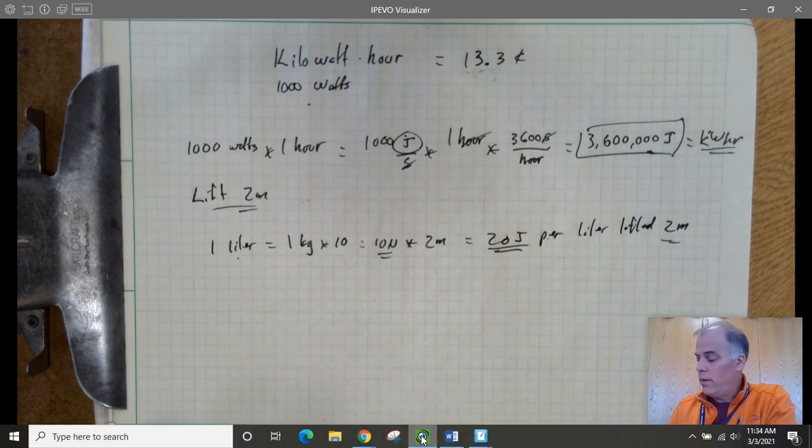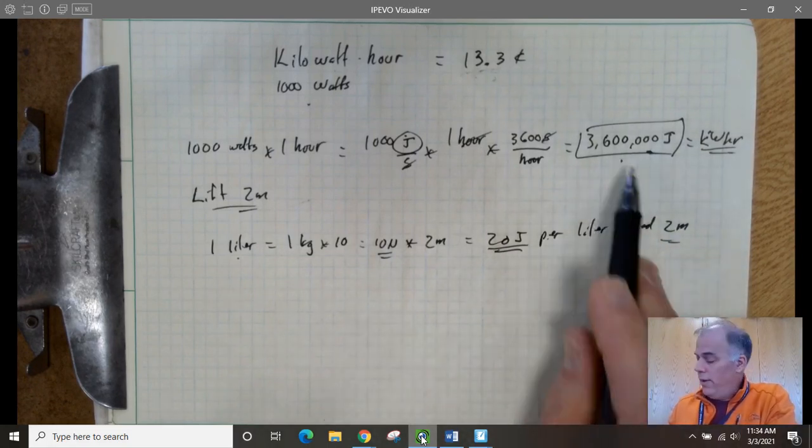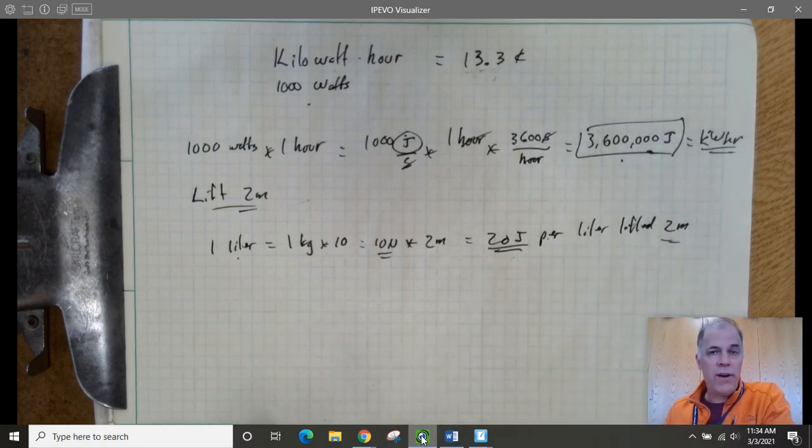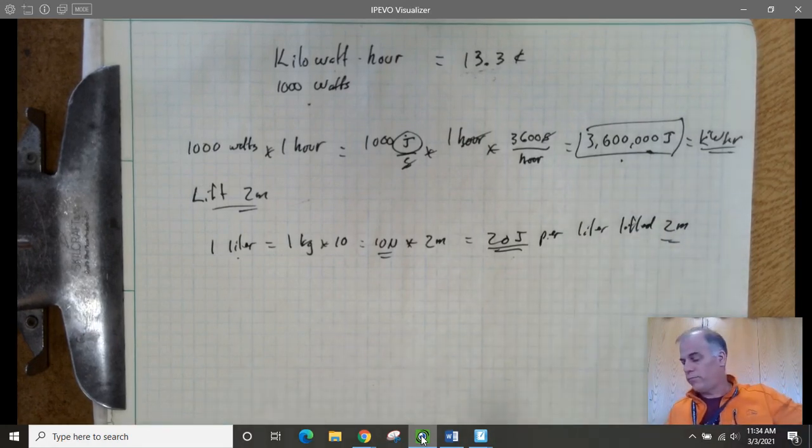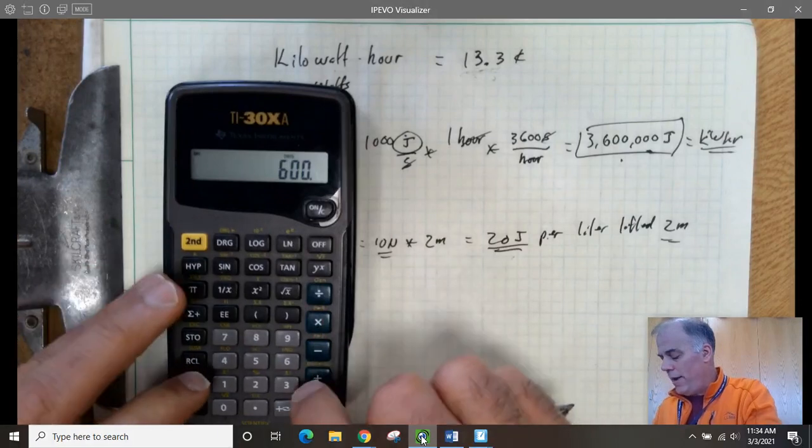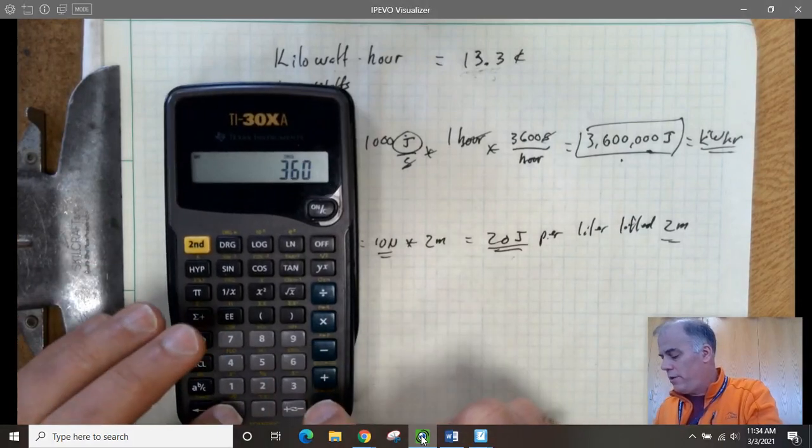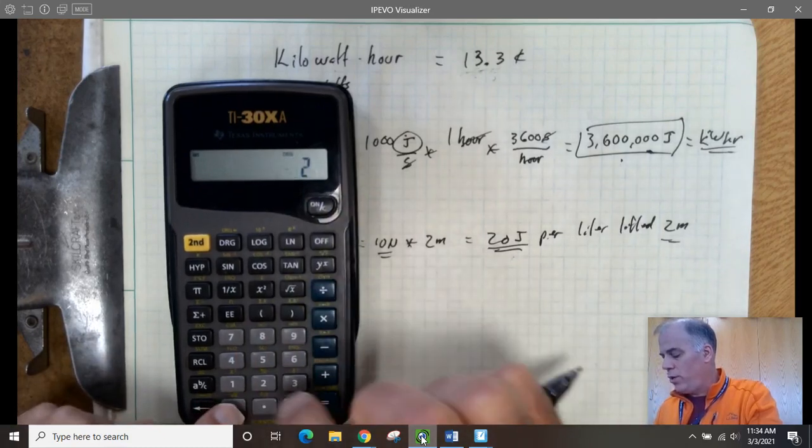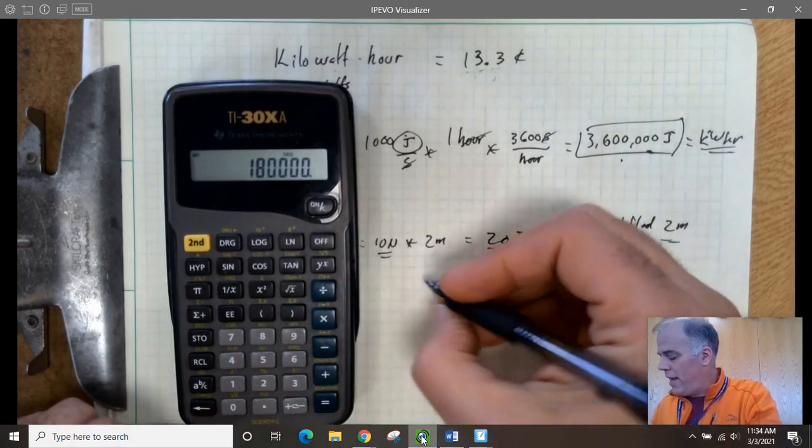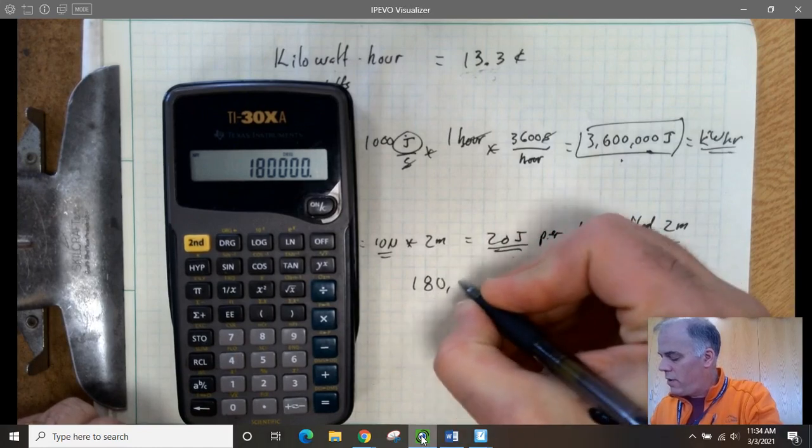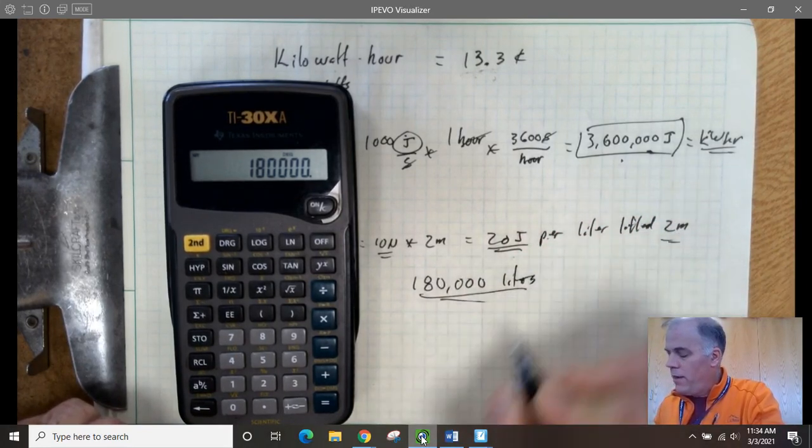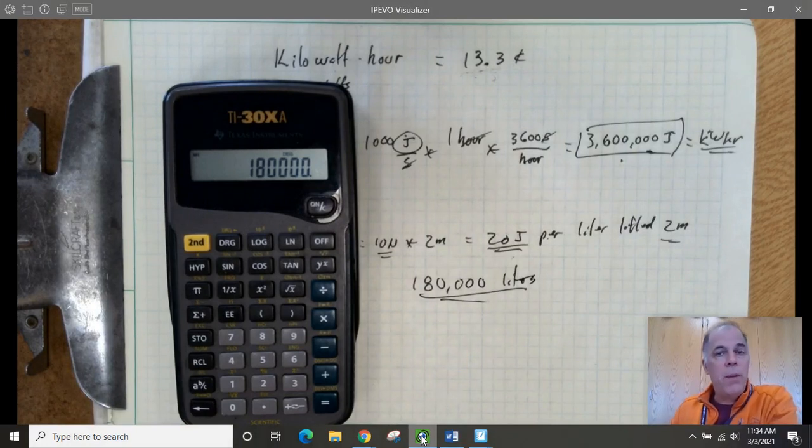So 3.6 million joules, 20 joules per liter. How many liters of water can we lift out of the pool? I can't do this in my head. 36,000, 3.6 million. We're going to divide that by 20 joules. So that means 180,000 liters. 180,000 liters we can pump out of our pool, lifting each one of them two meters.